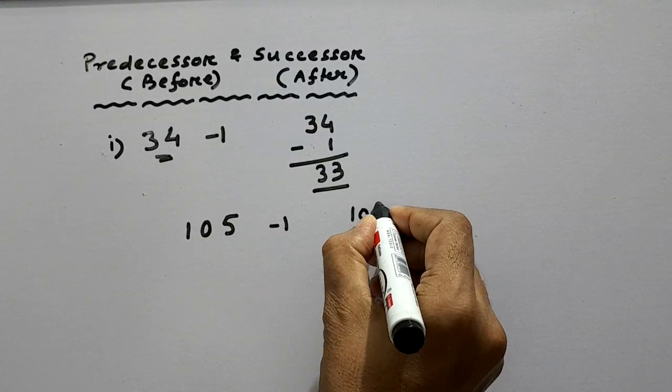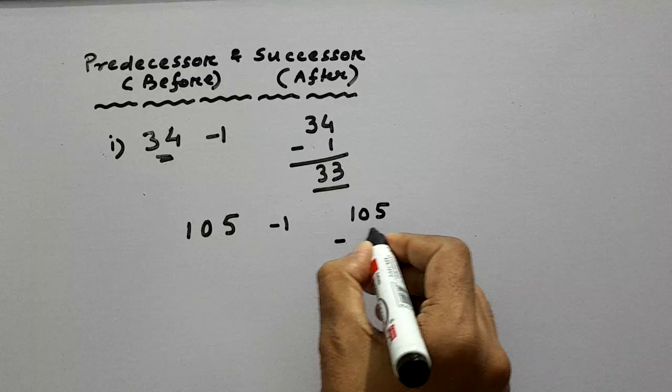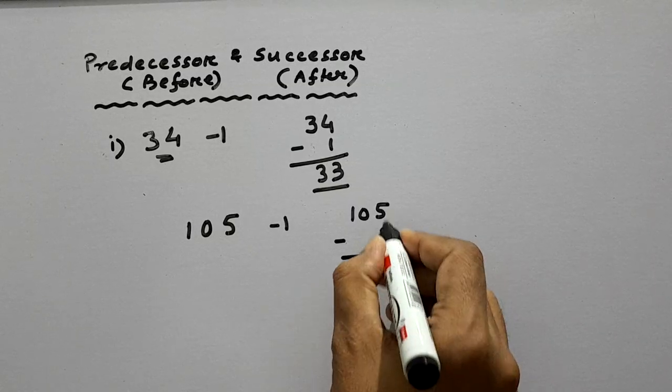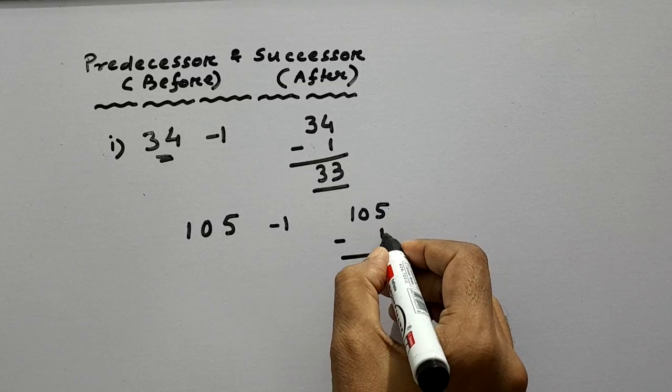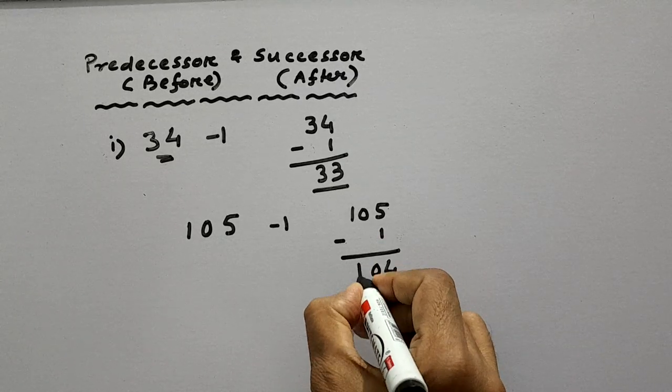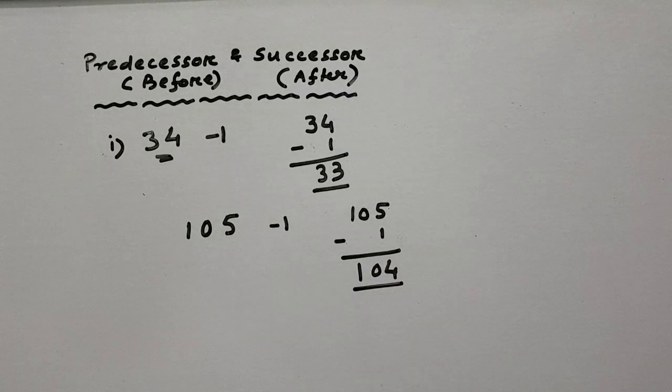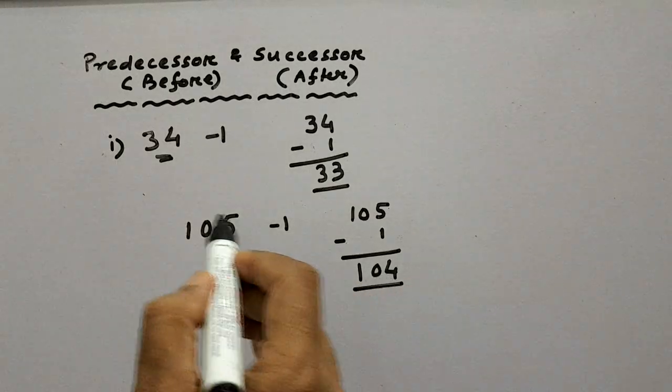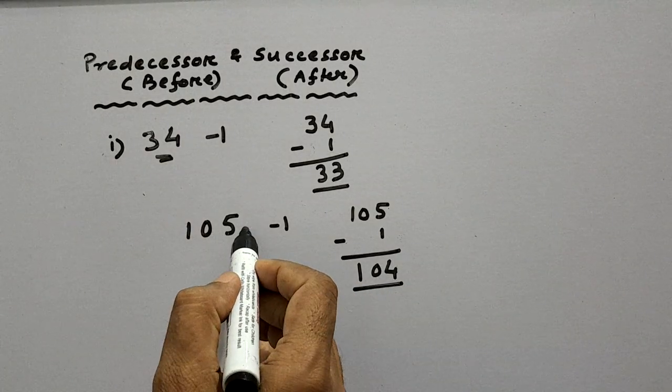So 105 minus 1. 5 ones minus 1 one is 4, then 0, then 1. So 104 is the number before 105. Right?